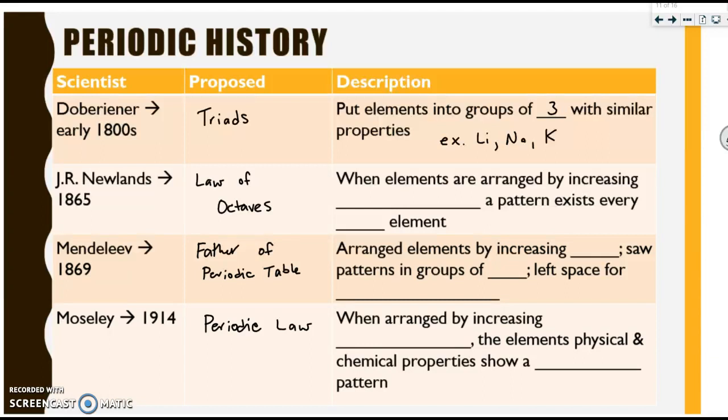Some years go by, more elements have been discovered, and J.R. Newlands, in 1865, proposed the law of octaves. He said that when elements are arranged by increasing atomic mass, a pattern exists every eighth element. His big mistake was making the connection between science and music or an art. Even though he was very similar to what the next scientist did, he is not given anywhere near as much credit because of this connection with science and art.